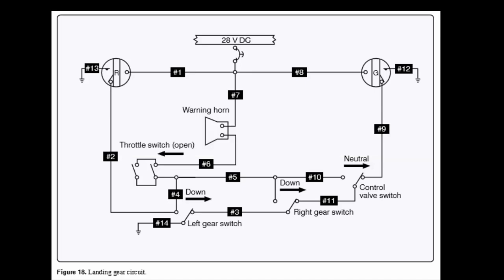If we start down here knowing that the warning horn's got to seek a ground, this is the only ground in the system that it can seek. It's down here off wire 14. So if we trace the warning horn down through the throttle switch as we come into 5, with the gears down, that's the way it's shown, we have to go through 5 through 10.